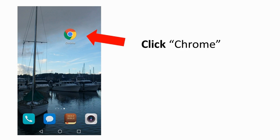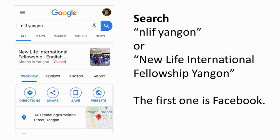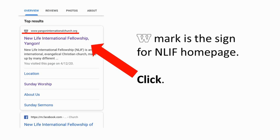First of all, open Chrome on your phone. Of course, your phone has to be connected to the internet. And search "NLIF Yangon." It worked when I tried. If you have a problem, then search the full name: New Life International Fellowship Yangon. So now you got this. The first result is Facebook, which we don't want. So please look at that later. Scroll down and find the W mark — this is the sign for the NLIF homepage. Make sure it's www.yangoninternationalchurch.org.